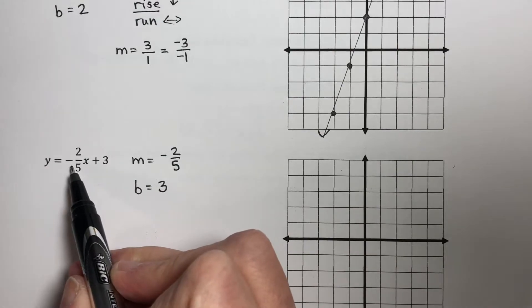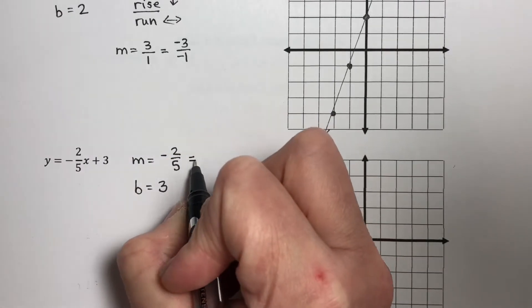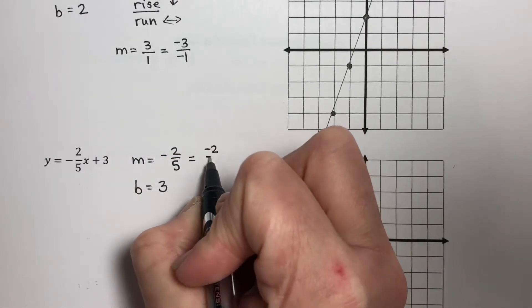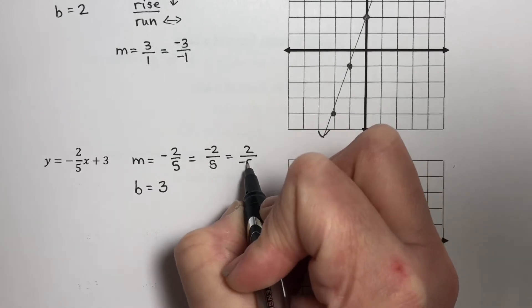Now, the negative here is written off to the side. I want to remind you that this is negative 2 fifths, which is numerically the same as negative 2 over 5, which is numerically the same as 2 over negative 5.